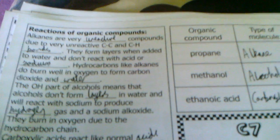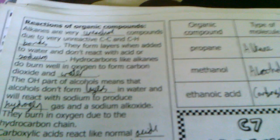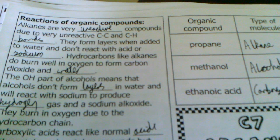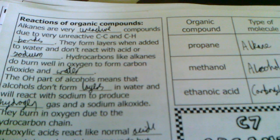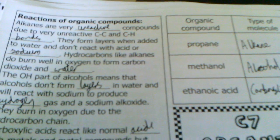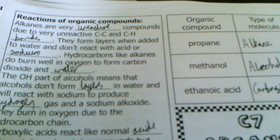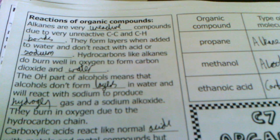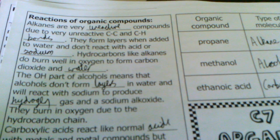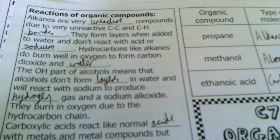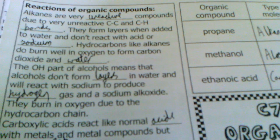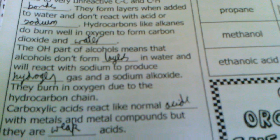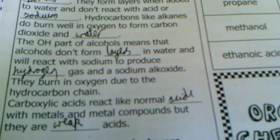Alkanes are very unreactive compounds due to very unreactive C-C and C-H bonds. They form layers when added to water and don't react with acid or sodium. You need to know the reactions of an alcohol with sodium and water. Hydrocarbons like alkanes burn well in oxygen to form carbon dioxide and water — that's the combustion reaction. The OH part of alcohol means alcohols don't form layers in water and will react with sodium to produce hydrogen gas and sodium alkoxide. They also burn in oxygen due to the hydrocarbon chain.